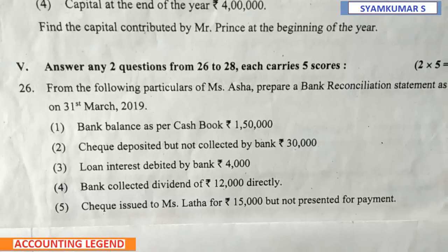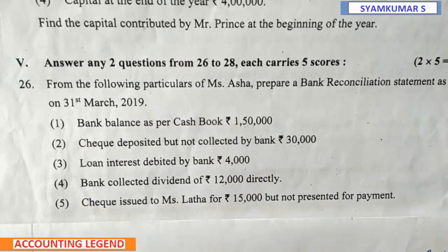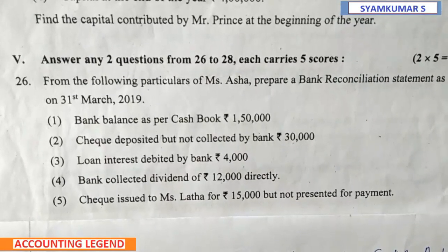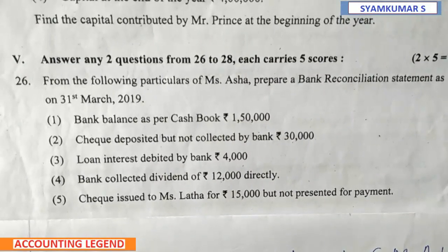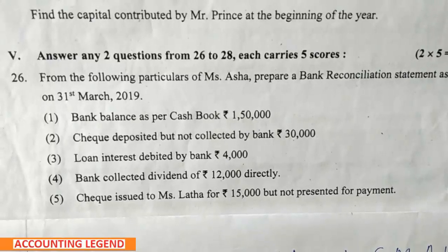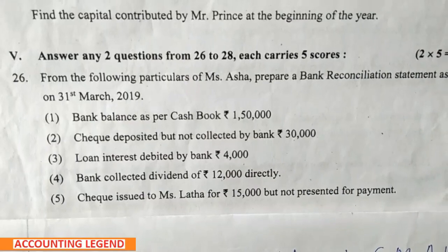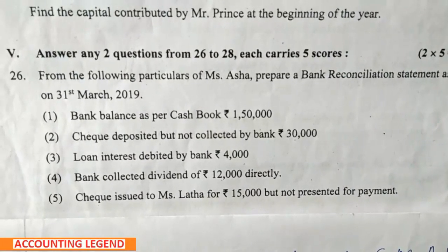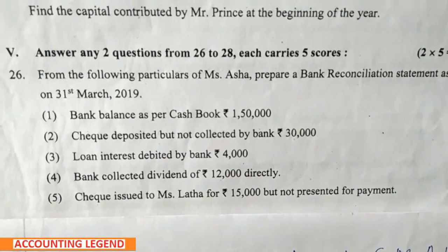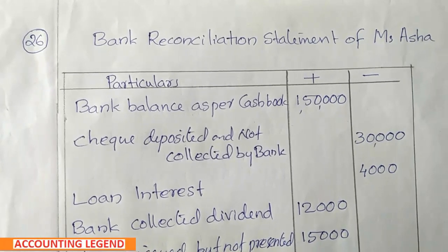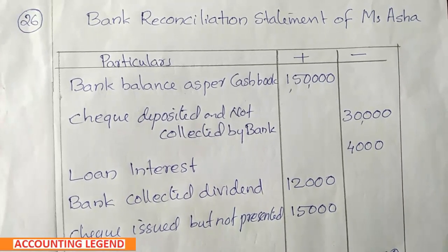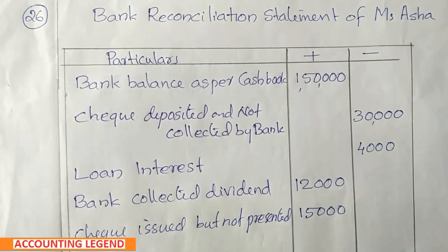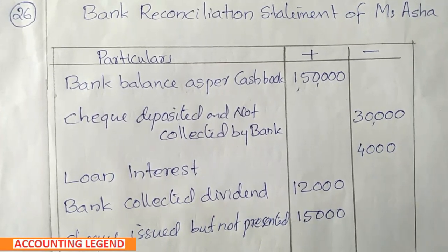When we prepare a bank reconciliation statement, we start with the bank balance as per cash book. Here the bank balance as per cash book is Rs. 1,50,000. We will then apply increasing and decreasing amounts to arrive at the passbook balance.